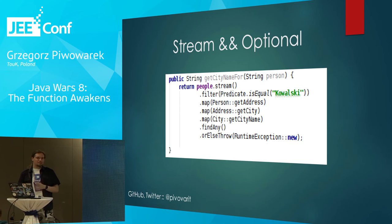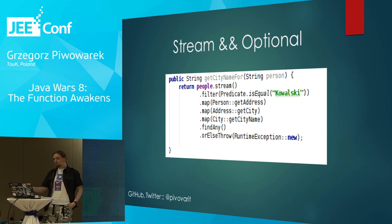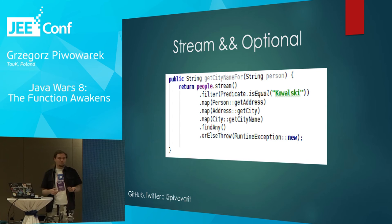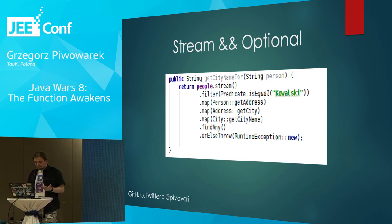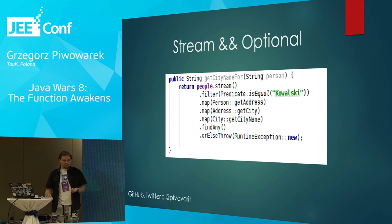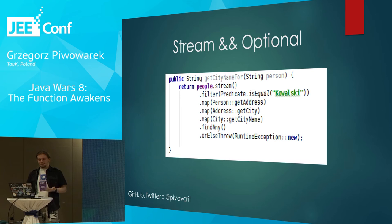An important thing about how streams and optionals work with each other: imagine we take a stream of people, filter them, perform some mappings, and then want to take just a single element. In that case we use the findAny method. The Java API creators thought about us and made findAny return an Optional — this forces us to actively think that when processing a collection, we're not 100% sure there will be at least one matching element. Our orElse method at the bottom comes from the Optional class.